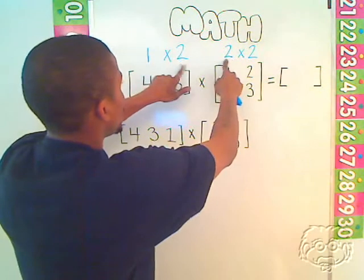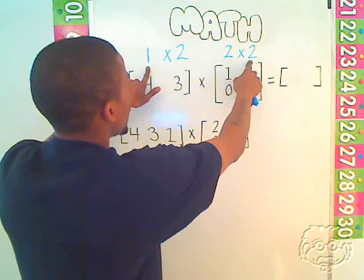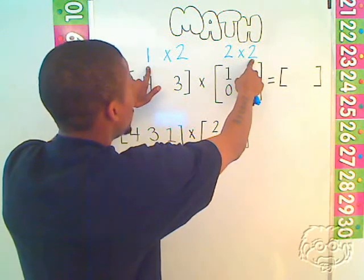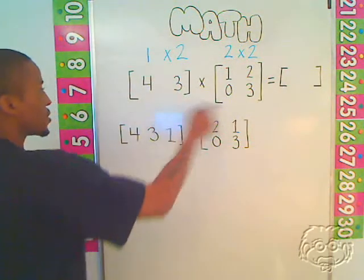Once we are sure that these two values are the same and that we can multiply, we should look here to figure out what's going to be the dimensions of my new matrix, a 1-2 matrix. Well, let's fill this out.